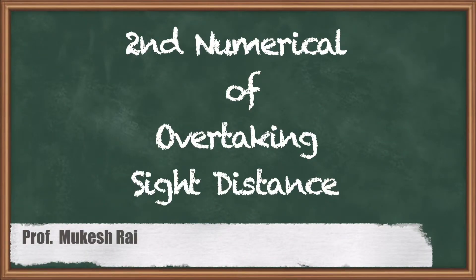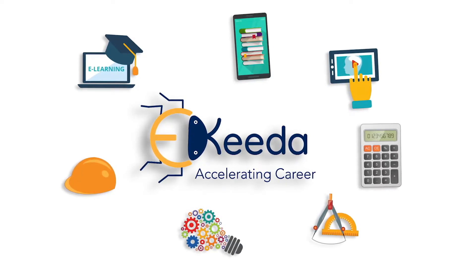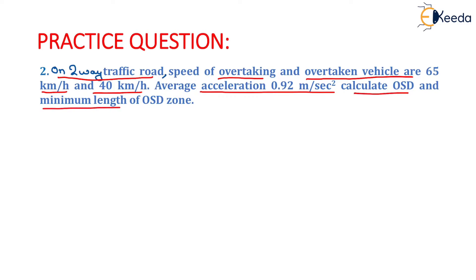Hello students, today we are going to solve the second numerical of overtaking sight distance. The question is given as: on a two-way traffic road, the speed of the overtaking and overtaken vehicles are 65 km per hour and 40 km per hour. Average acceleration is 0.92 m per second square. Calculate OSD and minimum length of OSD zone.